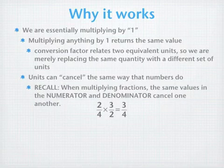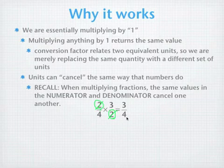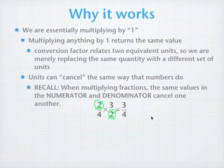Units can cancel the same way that numbers do, and that's how this works. So recall, for instance, that if you have two fractions being multiplied together, if you have the same number in the numerator and in the denominator, then they cancel out. The 2's will cancel out here and leave us with 3 fourths. We're going to do the same thing with units.